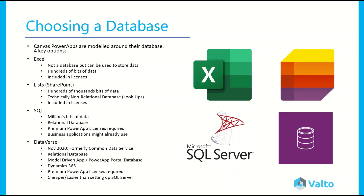The first option is Excel. Now we all know this isn't a database, but it can be used to store your data. It's perfect for small Canvas PowerApps used by a very small team of up to 10 people, where you're only going to be storing hundreds of rows of data or low thousands. This is perfect because it is included in all typical Office 365 licenses, so there are no additional costs. It's also very quick and easy to set up — you can host the Excel file in your OneDrive and get started very quickly.